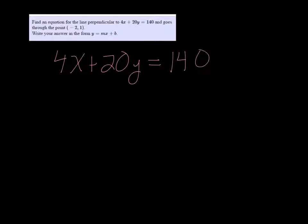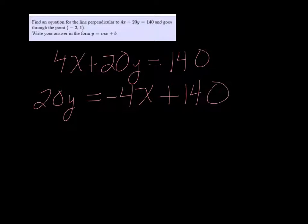Alright, to do this I need to solve for y so I can find the slope. So I'm going to subtract 4x on both sides. I have 20y equals negative 4x plus 140.